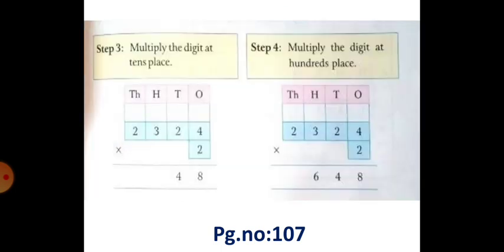And next one, Step 3: Multiply the digit at tens place. The numbers are 2 multiplied by 2. 2 twos are 4. You have to write 4 in tens place.